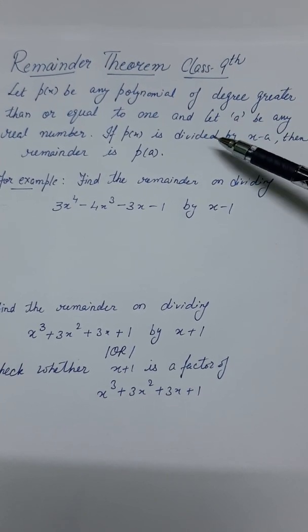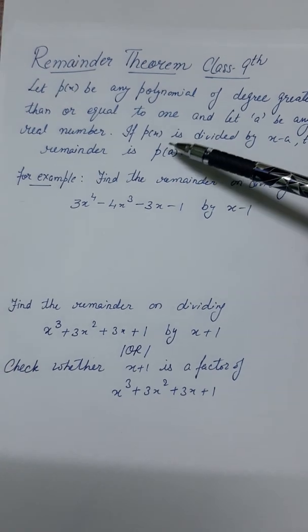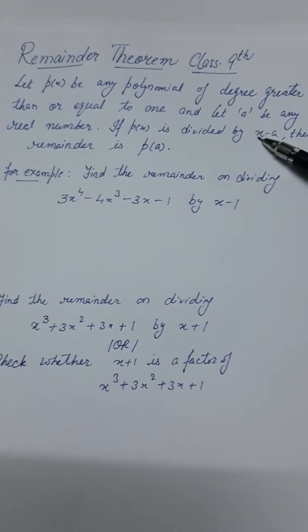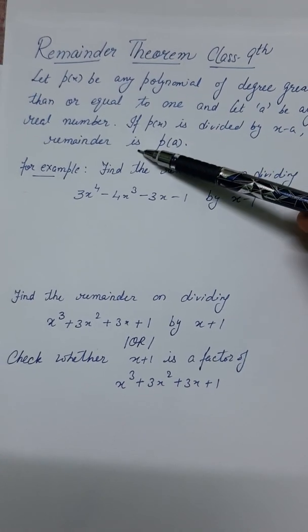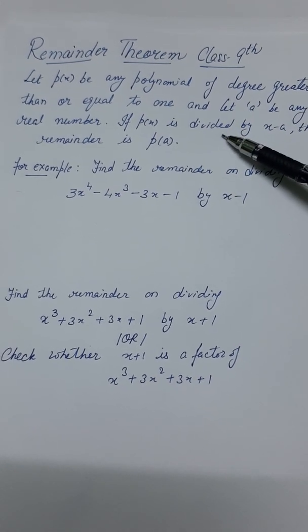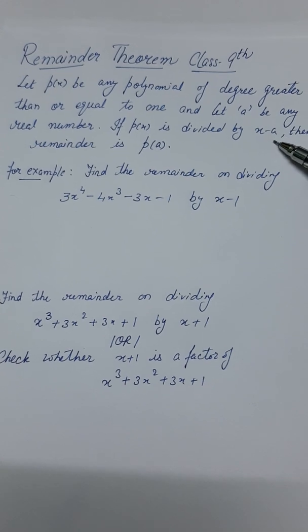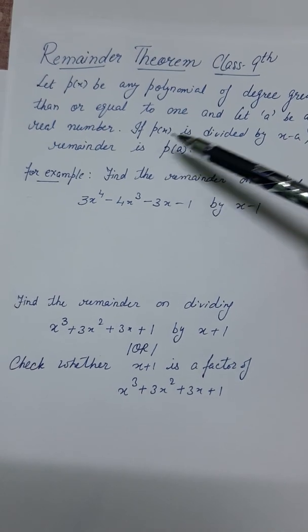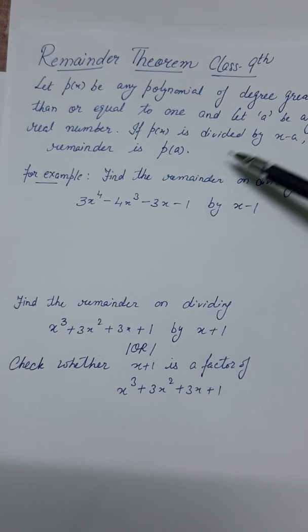Let a be any real number, and if p(x) is divided by x minus a, then the remainder is p(a). If this polynomial is divided by x minus a, the remainder will be p of a. It means we have to put the value of a in place of x.